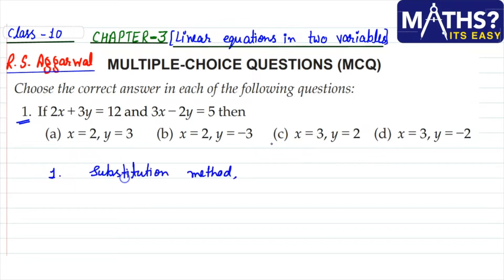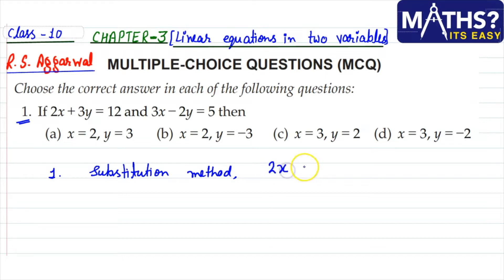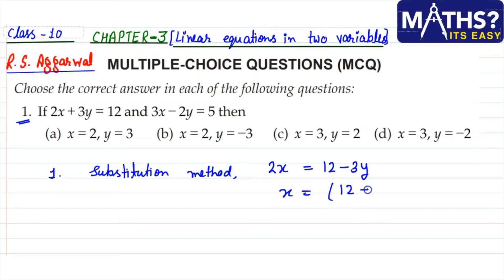To solve this, we will use the substitution method. In the substitution method, we give a value to any variable from any equation. So from the first equation, 2x = 12 - 3y, which gives us x = (12 - 3y) / 2.